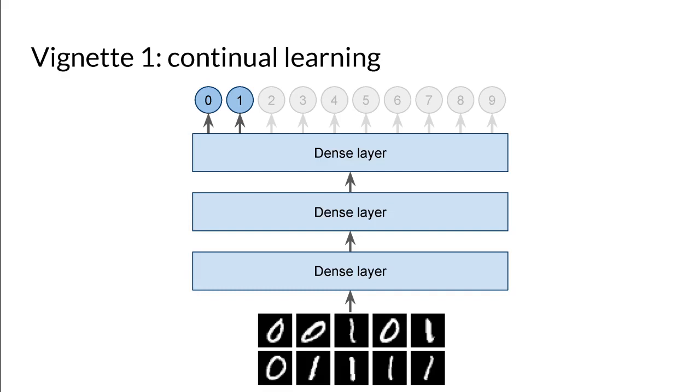In our paper, we present mFATE in two vignettes. The first is a continual learning scenario, where we train a network to classify two digits of MNIST at a time.